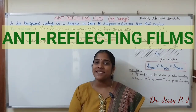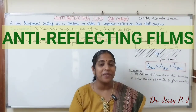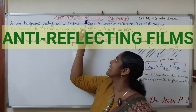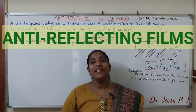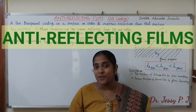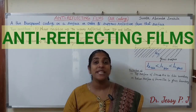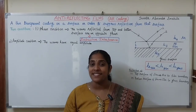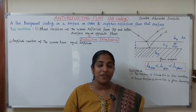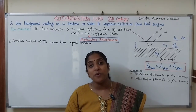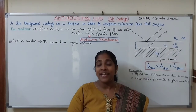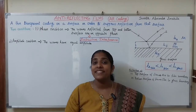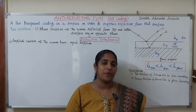Hi all, today we are going to discuss about one of the most important applications of interference in thin film — that is anti-reflecting films or AR coatings. In optical instruments like microscopes, telescopes, and cameras, we are using multiple lenses. When light is incident on the surface of these lenses, a part of the light energy is reflected. When there are more surfaces in such optical instruments, the loss of light energy due to reflection will be large, and the quality of the image produced will be poor.